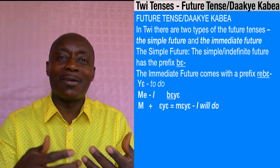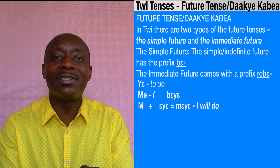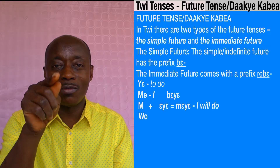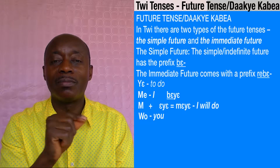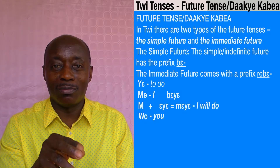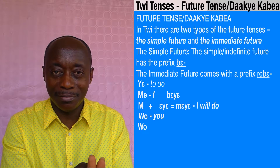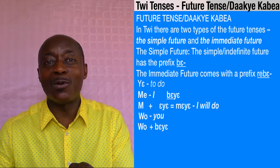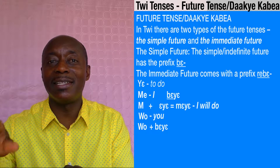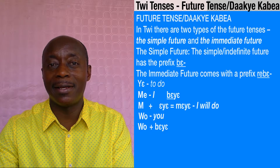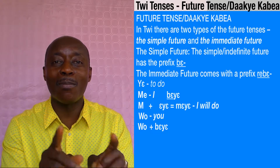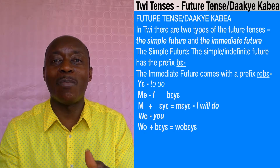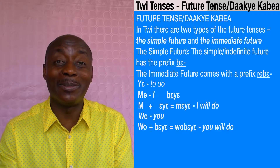Let's take another example in simple future. 'We' means 'you' (singular). If I want to say 'you will do,' I'll write 'we' plus 'beye.' As I've said, you have to preface the verb with 'be.' So 'we' plus 'beye' gives us 'webeye' — meaning 'you will do.'